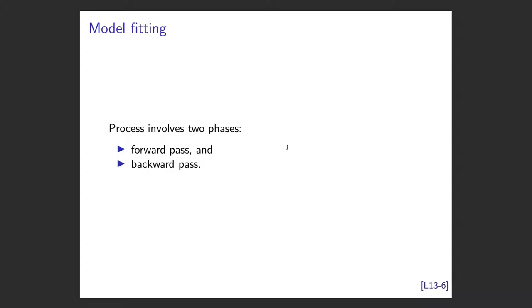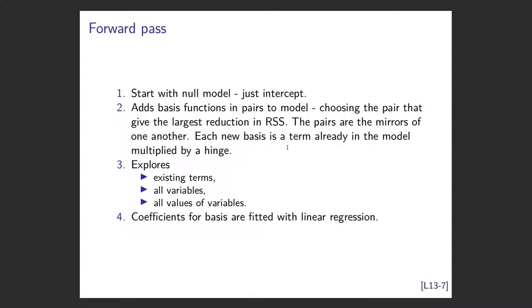So how are you actually going to fit this? Well, you fit it in two phases. You have a forward pass and a backward pass. The whole idea is the forward pass, we're just going to build a really overfitted model. We're just going to add in all terms until we overfit it. And then once we've got that overfitted model, we're basically going to start removing terms, taking into account some sort of cross-validation method. So forward pass: you start with the null model, which is just an intercept. And then we're going to add basis functions in. And when we add in hinges, we choose the pairs.